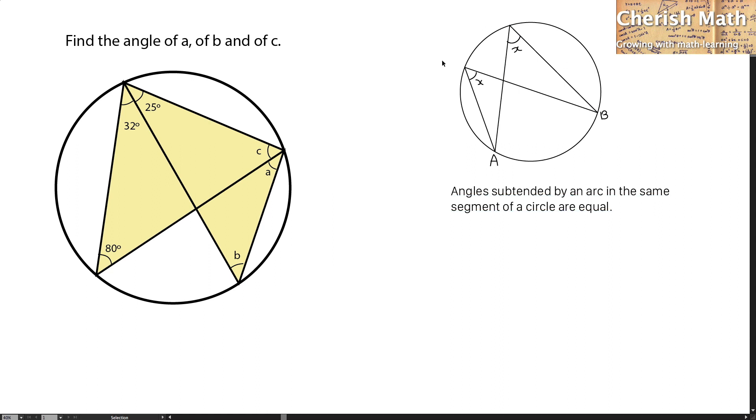We are going to use this theorem located on my right hand side to solve the problem. Now the first thing to do is to get what is the angle A here. The angle A here is the same as 32 degrees.